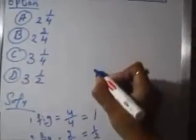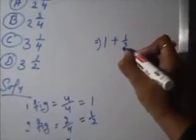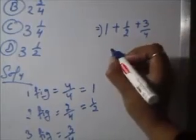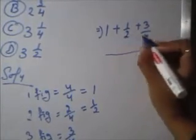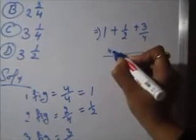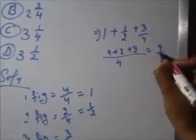Now we have to calculate in terms of the three figures. For that, we need to add the three fractions of the three individual figures. The first figure fraction is 1, the second is 1 by 2, and the third is 3 by 4. We take the LCM of these three, which equals 4. This gives us 4 + 2 + 3 = 9 by 4.